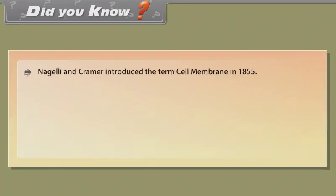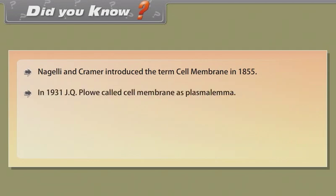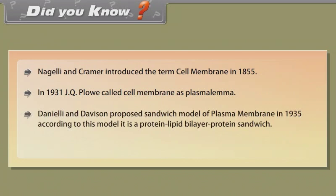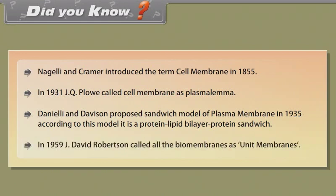Did you know: Nageli and Kramer introduced the term 'cell membrane' in 1855. In 1931, J.Q. Plowe called the cell membrane 'plasmalemma'. Danielli and Davson proposed the sandwich model of plasma membrane in 1935; according to this model it is a protein-lipid bilayer-protein sandwich. In 1959, J. David Robertson called all biomembranes 'unit membranes'.